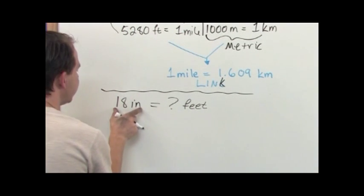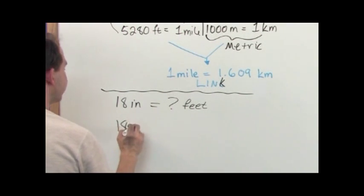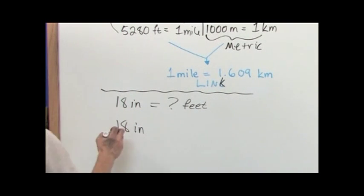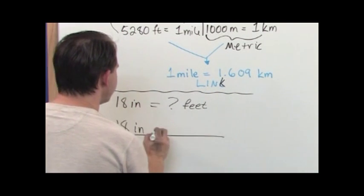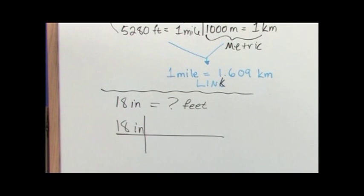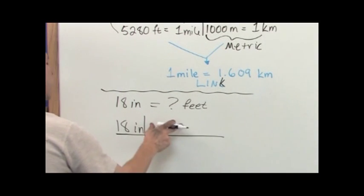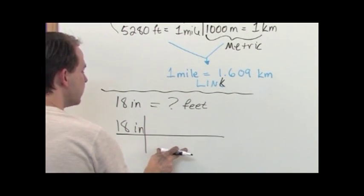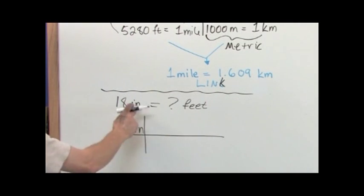This is what you do. You're trying to convert 18 inches, so you write that down, 18 inches. Then you draw a line off to the right and you draw a vertical bar right here. This is going to end up being a fraction line. Anything on the top is a numerator, anything on the bottom is a denominator.